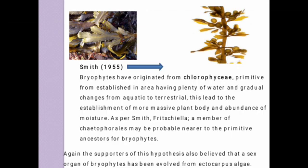This led to the establishment of a more massive plant body and abundance of moisture. As per Smith, Phaeoceros, a member of the Chaetophorales, may be a probable near ancestor of bryophytes. The supporters of this theory believe that the sex organs of bryophytes evolved from the Ectocarpus algae.